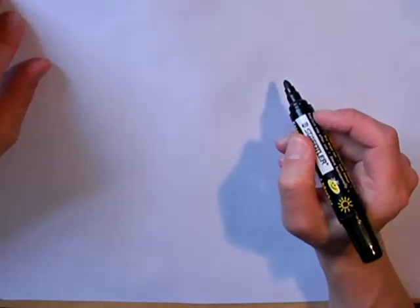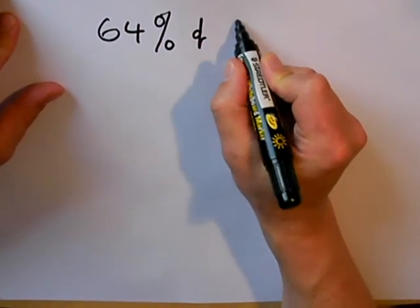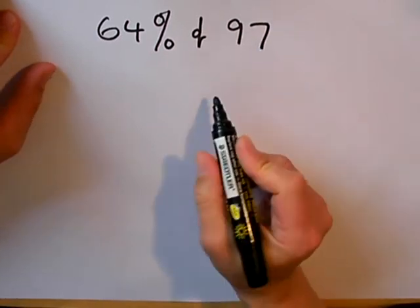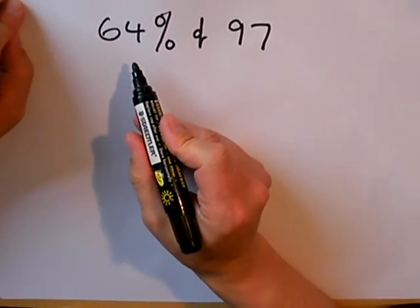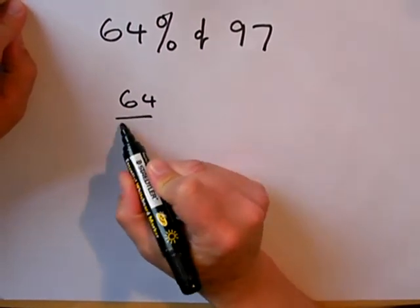Here's another example. 64% of 97. Now remember, you can rewrite 64% as either a fraction, 64 out of 100, and multiply by 97.